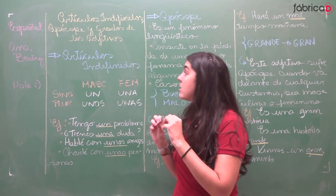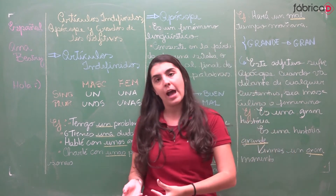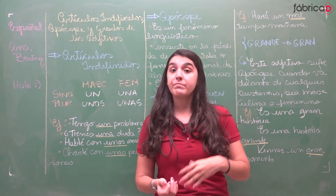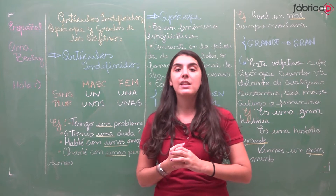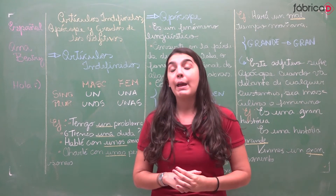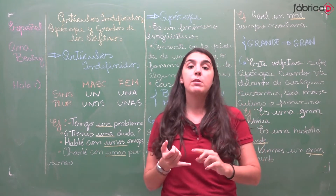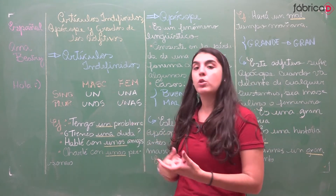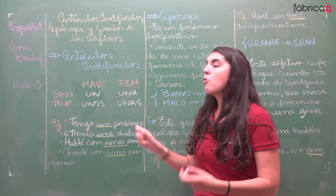Começando com artigos indefinidos. O nome já diz: são artigos indefinidos ou indeterminados, que não é possível determinar de fato, com certeza, com clareza, o substantivo que a gente está se referindo. A gente tem basicamente quatro artigos indeterminados ou indefinidos, divididos em gênero e também em número singular ou plural. Temos dois artigos femininos e dois artigos masculinos. No singular, temos 'un' para o masculino e 'una' para o feminino. No plural, 'unos' e 'unas'.